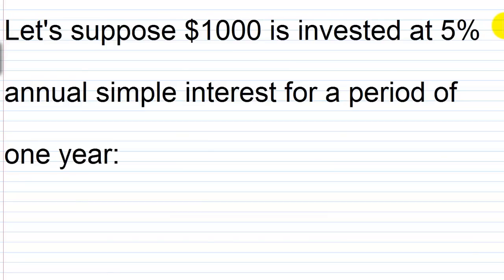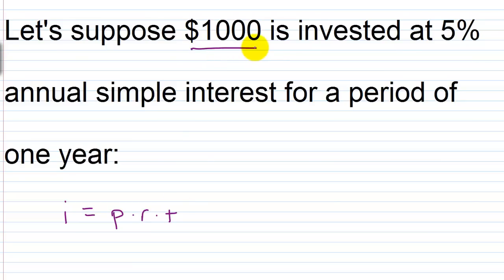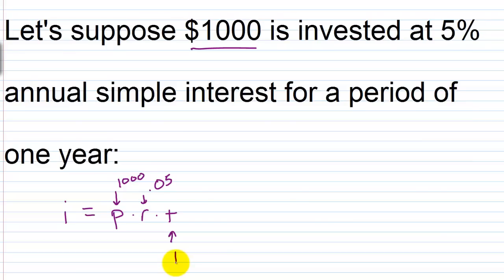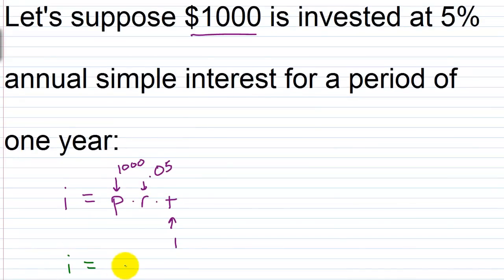Suppose that one thousand dollars is invested at five percent annual simple interest for a period of one year. How much interest would we earn? Well, i equals p times r times t. One thousand is my principal, five percent converts to 0.05 as a decimal, and time is one. So I have one thousand times 0.05, which gives i equals 50. That's the amount of simple interest earned after one year.